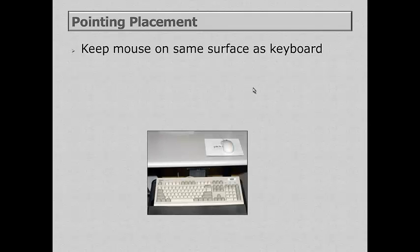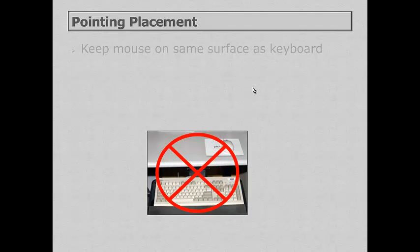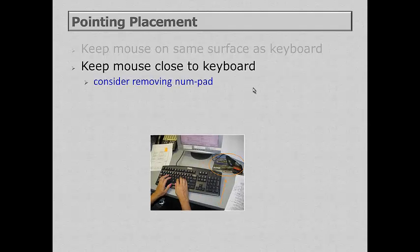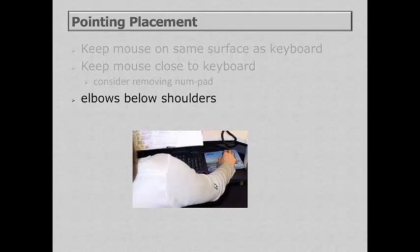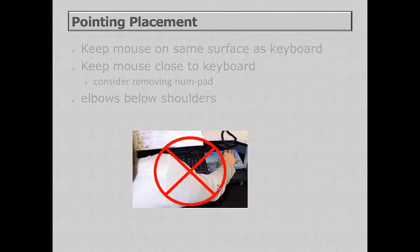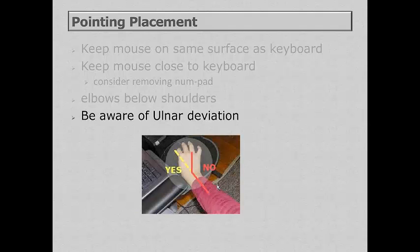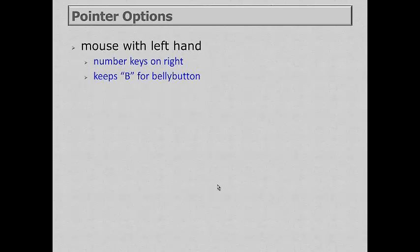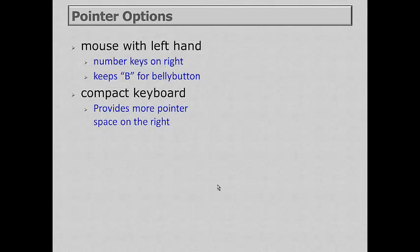When considering where to place the pointing device, make sure it's on the same surface as the keyboard — never above or on a different surface. Keep the mouse or trackball as close to the keyboard as possible. Be aware that you want to keep the elbows close to the body, and look for ulnar deviation when using a pointing device. If a person can use the mouse with the left hand, this allows the number keys to stay on the right side and keeps the B aligned with the belly button. A compact keyboard removes the navigation and number keys, providing more space for a pointer on the right side.